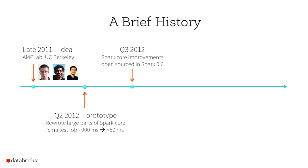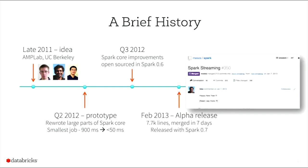All these engine improvements were open sourced as part of Spark in the third quarter of 2012. The Spark Streaming API was finally open sourced in February 2013 as an alpha release. I submitted the patch — almost 8,000 lines — on January 1st, wished Matei a happy new year on the pull request, and 7,000 lines of code got merged within seven days. Those were the golden days. In January 2014, we marked it as stable with Spark 0.9.